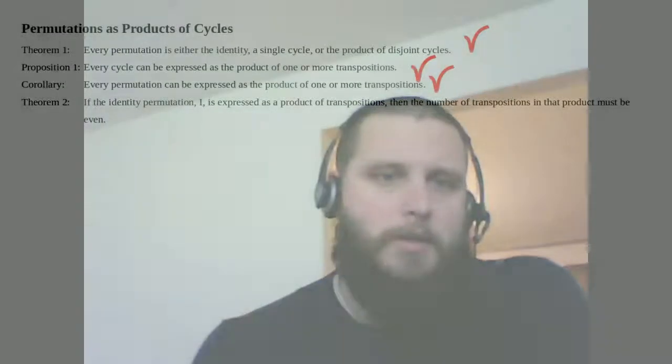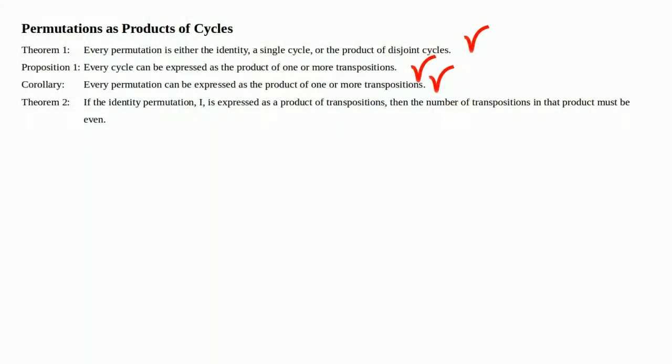In the last video we proved a corollary to Theorem 1 and Proposition 1, which says that every permutation can be expressed as the product of one or more transpositions. In this video we're going to prove Theorem 2, which states that if the identity permutation I is expressed as a product of transpositions, then the number of transpositions in that product must be even — or put another way, you can't express the identity permutation as a product of an odd number of transpositions.